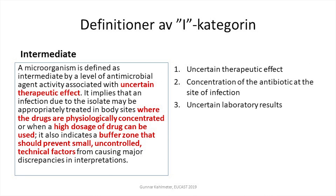This is the old definition of intermediate — the one valid until the last of December 2018. As you can see, it has a number of components, some of which do not actually hang very well together. It talks about uncertain therapeutic effect, and it talks about the concentration of the antibiotic at the site of infection — either because you could have increased the dose or because the agent is concentrated at the site of the infection for physiological reasons. And it also adds the uncertainty of laboratory results — uncontrolled technical factors in laboratory testing.